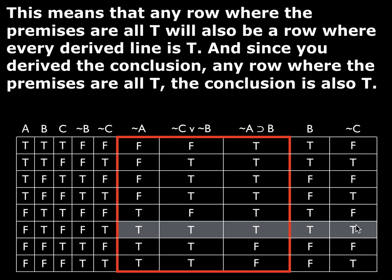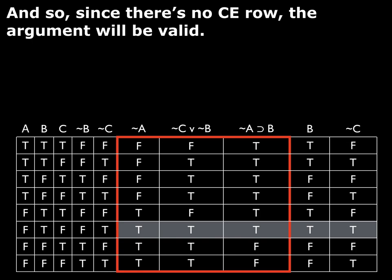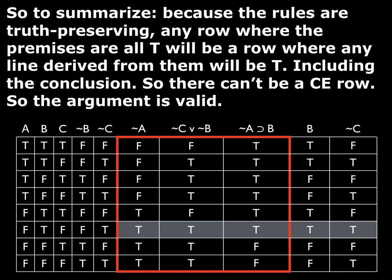What that means is that any row where the premises are all true — in this case there is only one — will also be a row where every derived line is true, because that's just how the rules work. The rules guarantee that any row where the premises are true, your derived line is also going to be true on those rows. The conclusion is also a derived line, which means there won't be a counterexample row. Any row where the premises are true, the conclusion is also true. We know there can't be a counterexample if the rules are truth-preserving. So the argument has to be valid.